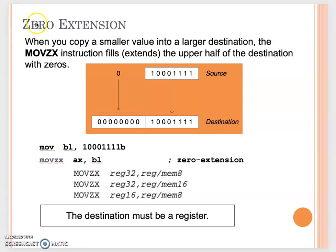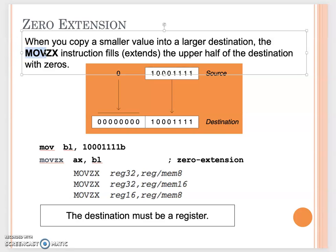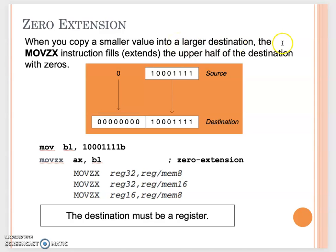Let's continue to introduce different move instructions. We call these zero extension or sign extension. Remember, in the first video we talked about how the move instruction requires the source operand and the destination operand to have the same size. But sometimes we want to copy a smaller value into a larger destination, so instead of using the move instruction we use MOVZX.